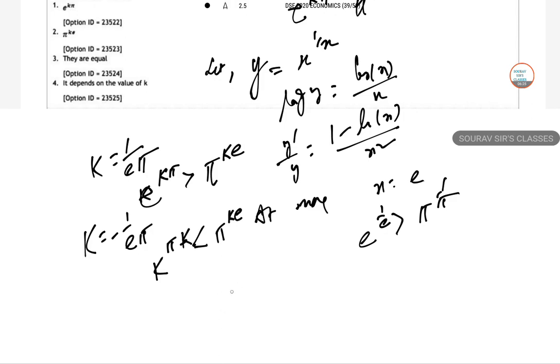So k is the decider. Hence option number 4 is correct.